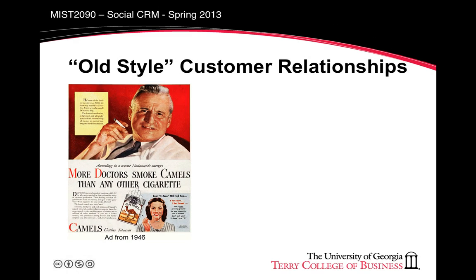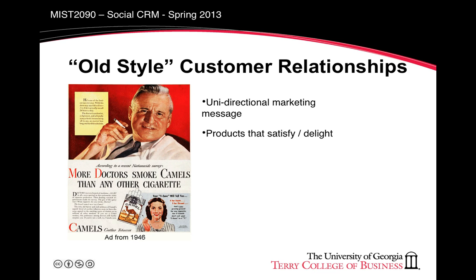The existing marketing paradigm is that the company controls the message. There is a unidirectional marketing message from the company to the consumer. The company can control the message that is sent out, as in this older ad from 1946, letting us know that their product will satisfy rather than delight. The company generates the product and the marketing content.